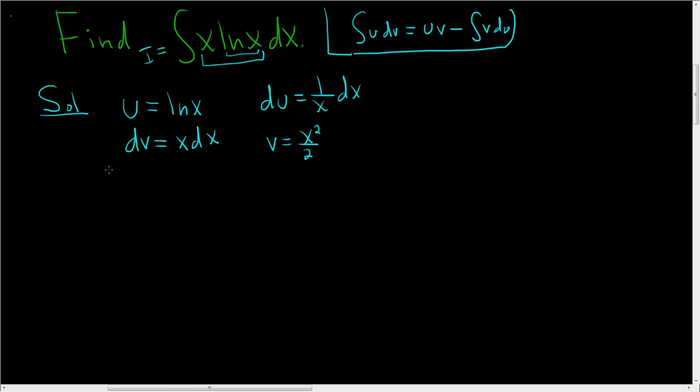I'm going to call this I so we don't have to write it down again. So I equals uv, which is (x²/2)ln(x), minus the integral of v du. I'm going to pull this 1/2 outside, so this is x² times 1/x dx.